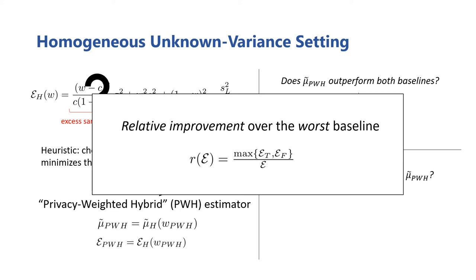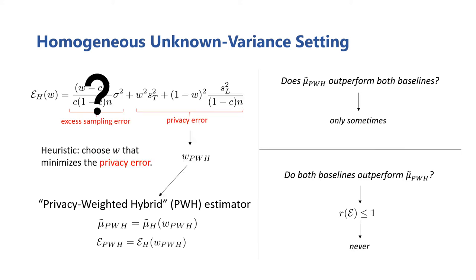Such a weak condition seems like it should hold for any hybrid estimator, but we found that even within our defined family of hybrid estimators, there are many weighting choices that can make this hybrid estimator worse than both baselines simultaneously. Fortunately, though, for the PWH estimator, we were able to confirm that this improvement is indeed always greater than one.